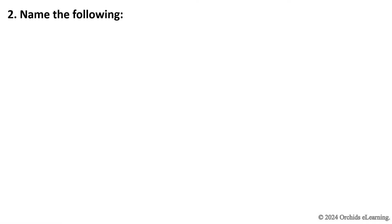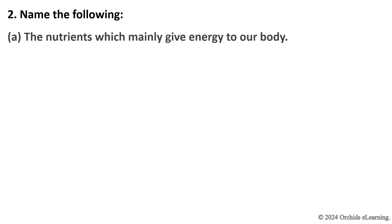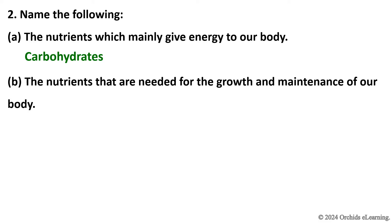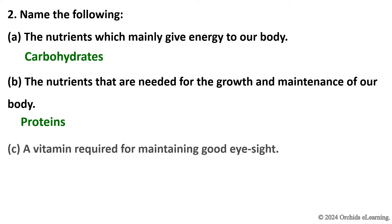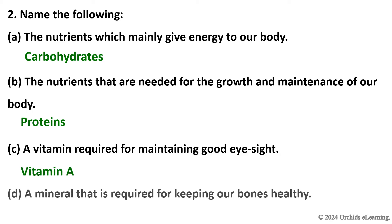Name the following: The nutrients which mainly give energy to our body — Carbohydrates. The nutrients that are needed for the growth and maintenance of our body — Proteins. A vitamin required for maintaining good eyesight — Vitamin A.